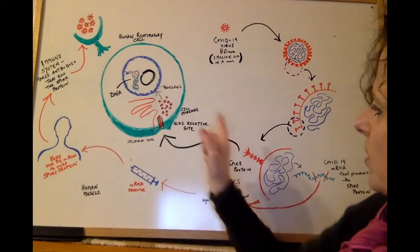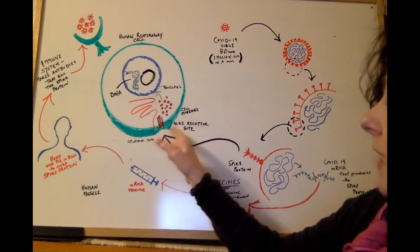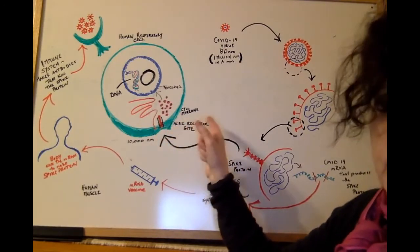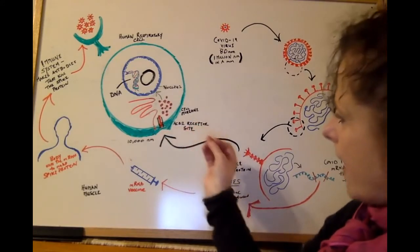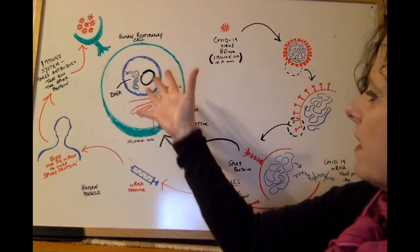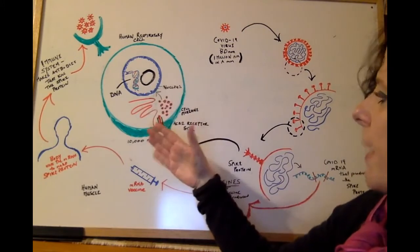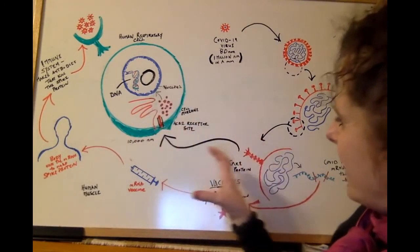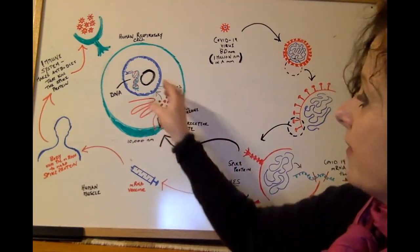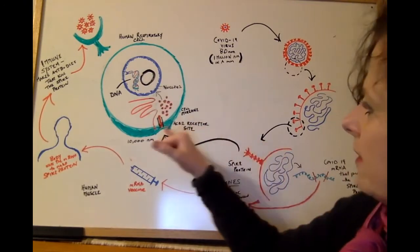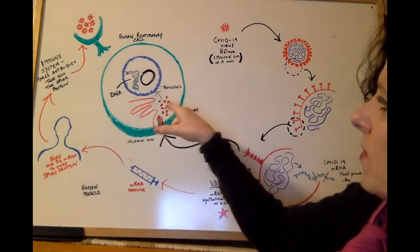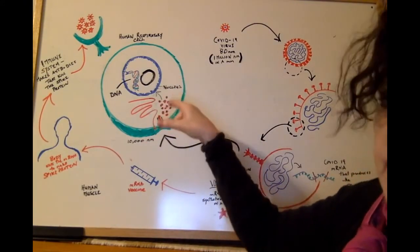When the spike protein attaches to the receptor site, and in this case it's called an ACE2 receptor site, it actually gets pulled into the cell. So it allows for a reaction that happens that opens the cell up, and in goes the virus. Spike protein, receptor site, all sorts of viruses are now in your cell.